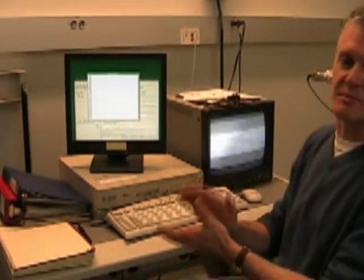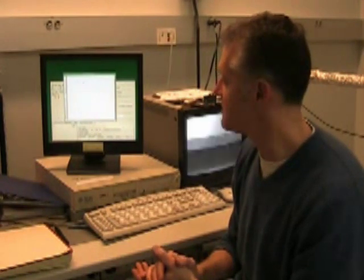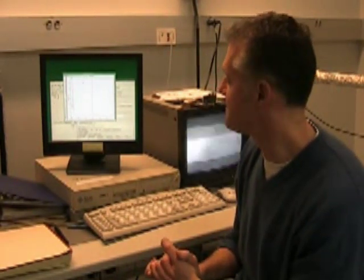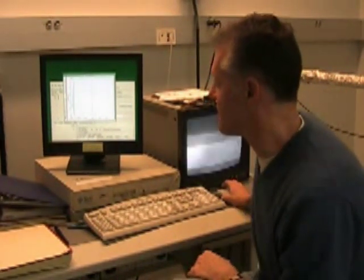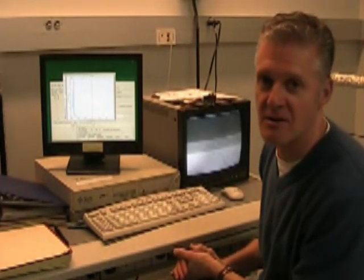We're going to start a scan now of this sample. This is just gallium nitride that we're using as a baseline. We'll be taking a look at the gallium peaks and the nitrogen peaks and the oxygen peaks just to be sure that we know what this sample is, and then we will go to some more complex samples later.